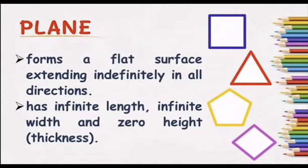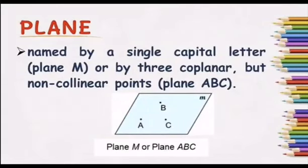The third undefined term is a plane. A plane forms a flat surface extending indefinitely in all directions. It has infinite length, infinite width, and zero height or thickness. A plane is named by a single capital letter, plane M, or by three coplanar, but non-collinear points, or plane ABC as shown below.